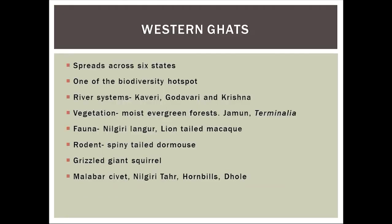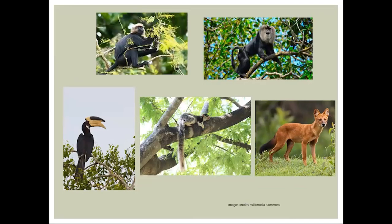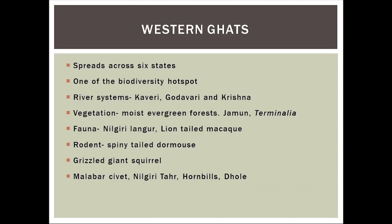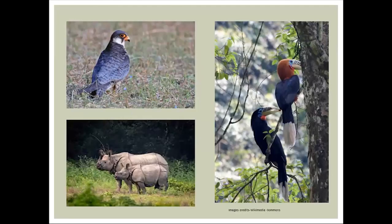The Western Ghats spreads across six states and is one of the biodiversity hotspots. Remember the lion-tailed macaque, an endangered species, the hornbills, and the moist evergreen forest vegetation with Jamun and Terminalia trees. Northeast India is also a biodiversity hotspot with varied vegetation — evergreen, semi-evergreen, deciduous forests, and grasslands. Remember the rufous-necked hornbill, one-horned rhinoceros, and the migratory Amur falcon.